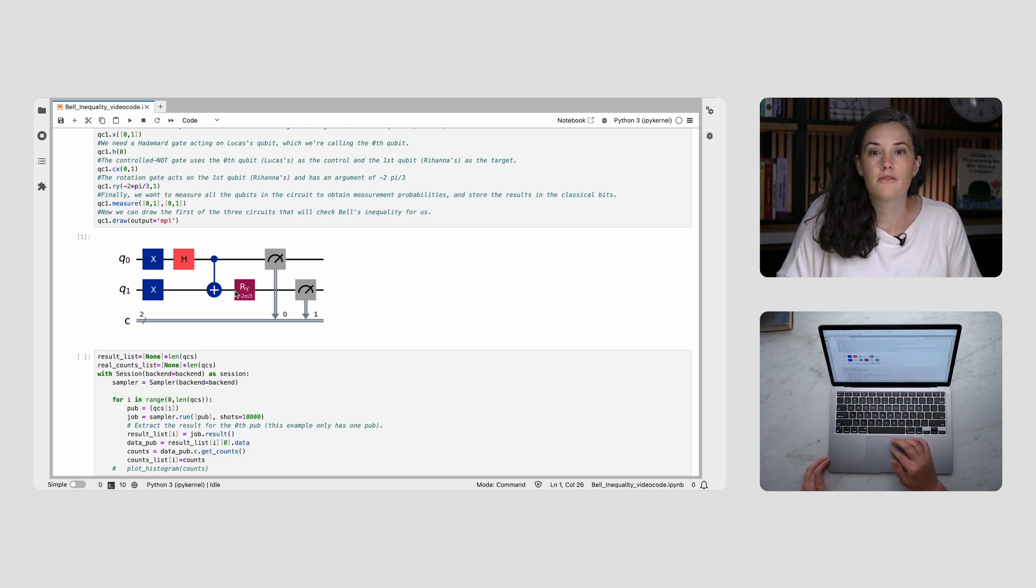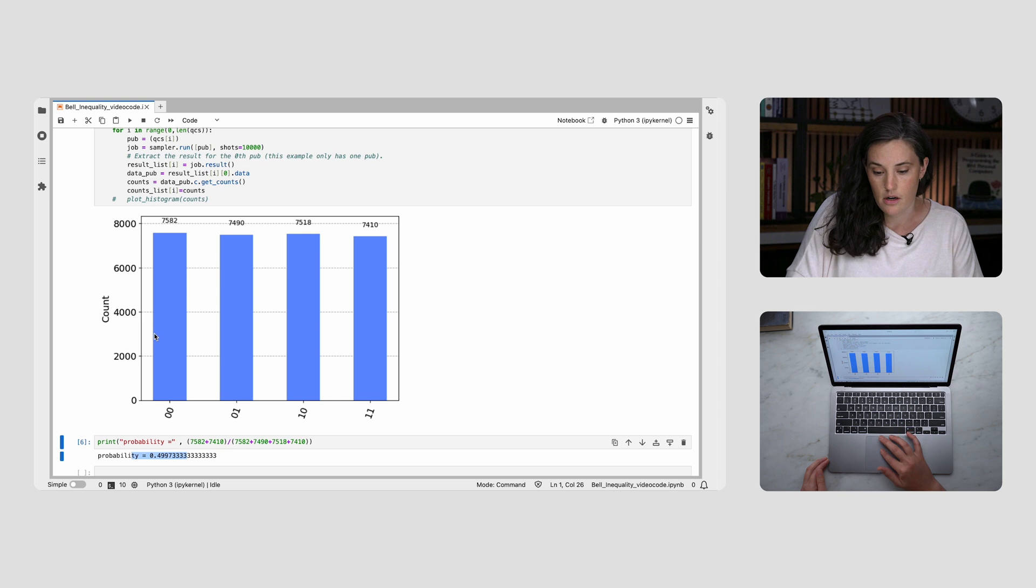We can use the Qiskit primitive sampler to run this experiment many times and collect statistics from the resulting measurements. The two columns 00 and 11 represent the times when Lucas and Rihanna measured the same sign, which is what we're after.